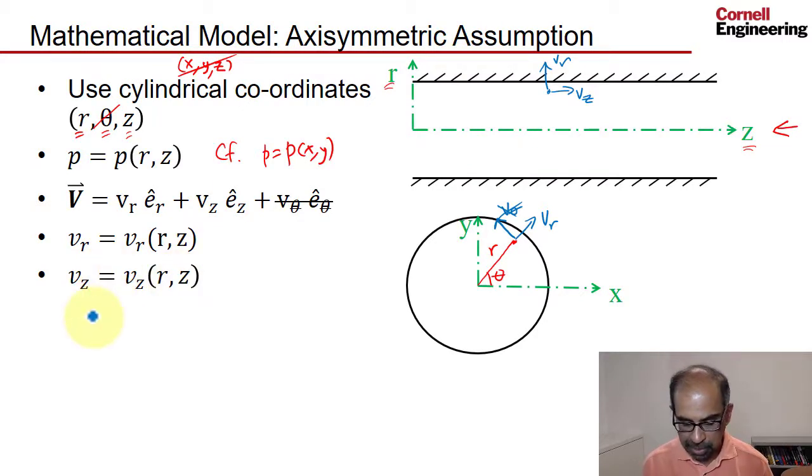So we have two components of velocity, and they depend only on two coordinates r and z. Before I go to talk about the domain, let's look at the number of unknown functions we have. We have pressure, radial velocity, axial velocity, and since we have heating, we also have temperature, which again is a function of r and z, and we have density, which is also a function of r and z. The density can vary because of the heating for air, so we have five unknown two-dimensional functions to determine.